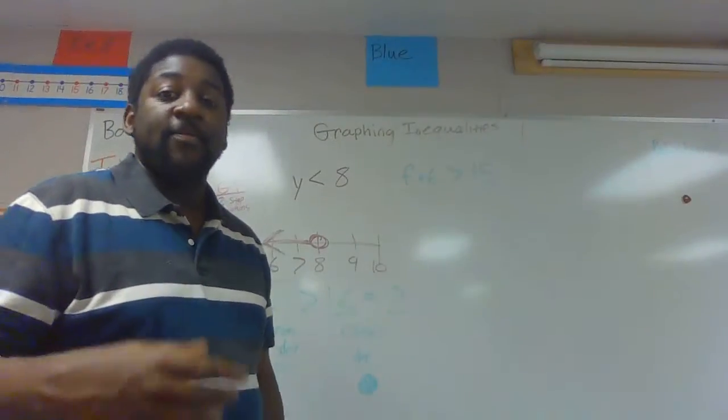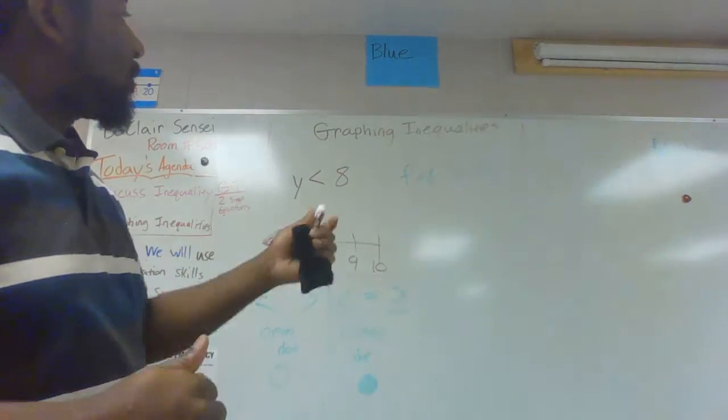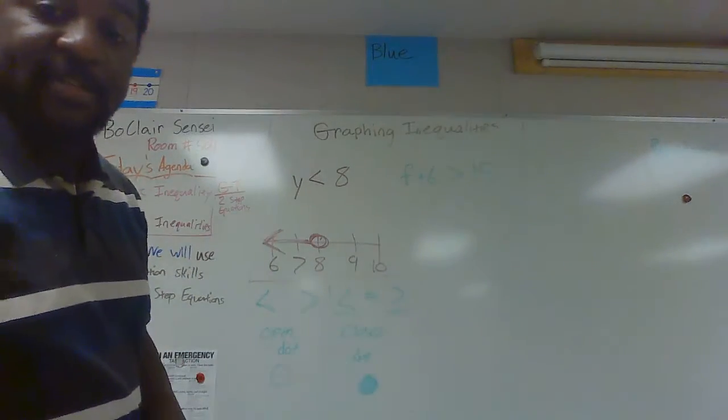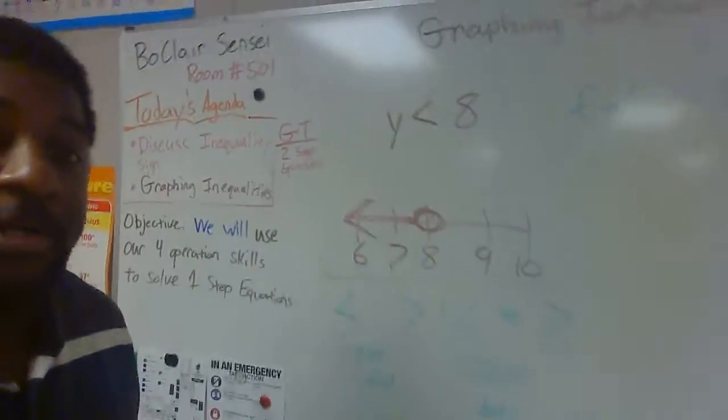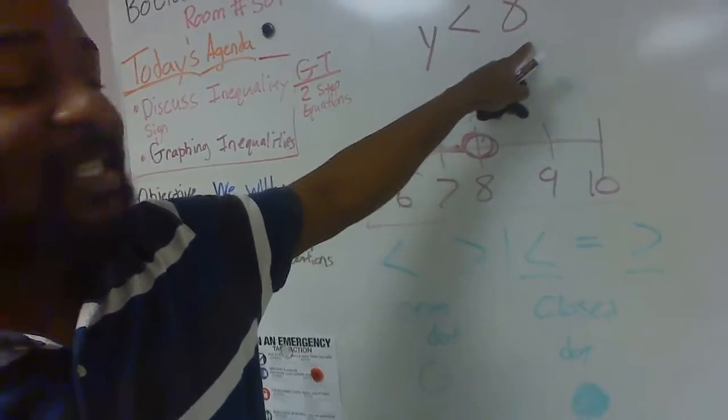All right peeps, today we're adding a step to those graphing inequalities that we talked about on Friday and a little bit on Thursday. With the graphing inequalities, remember the first things we talked about: you look at your equation, this one says y is less than 8, or my answer is less than 8. Open circle because we don't have the equal to sign.